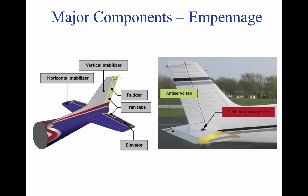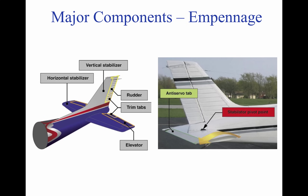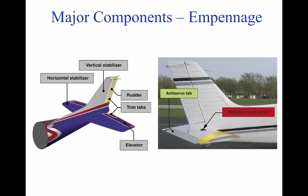The empennage consists of the entire tail of the aircraft. There are fixed parts, such as the horizontal and vertical stabilizer. There are also movable parts, such as the elevator, one or more trim tabs, and the rudder.